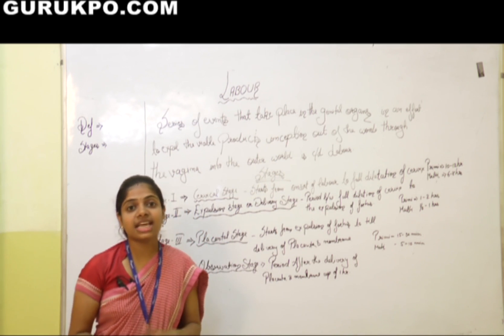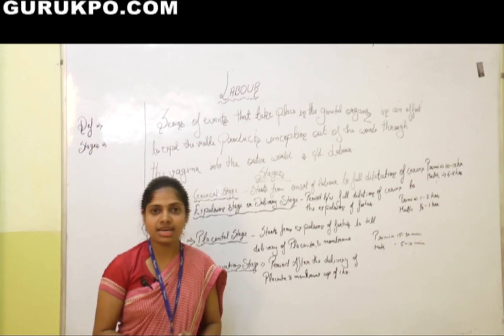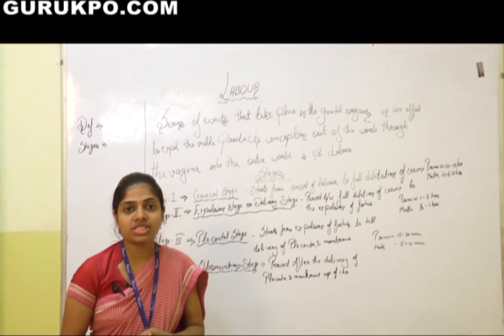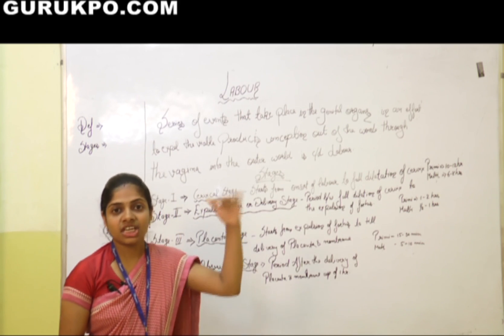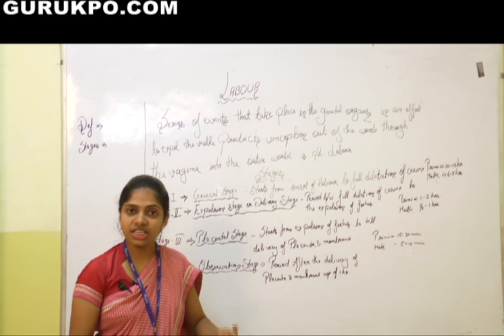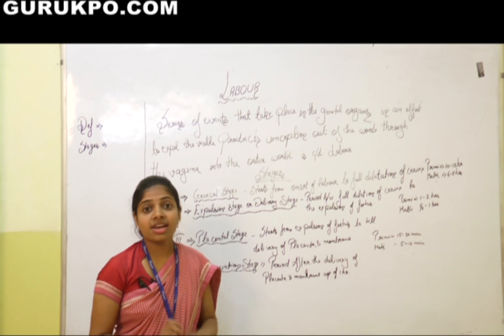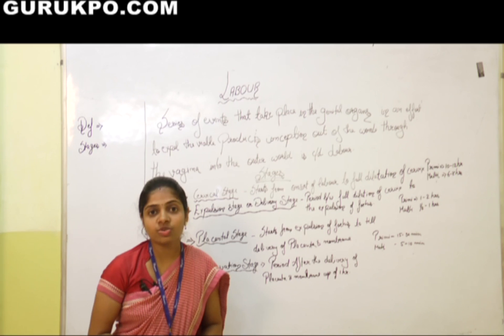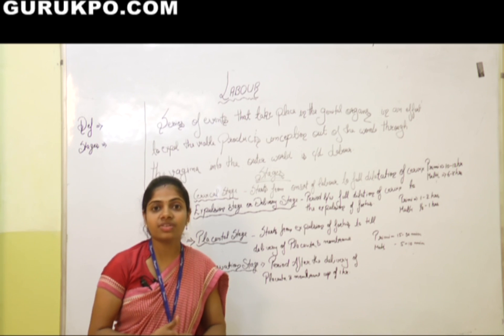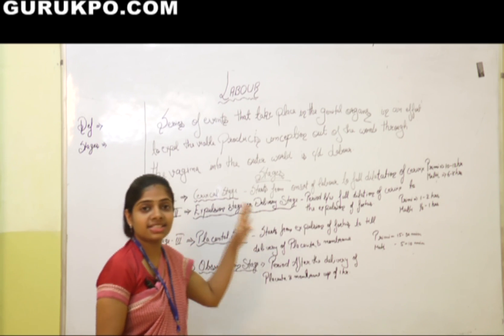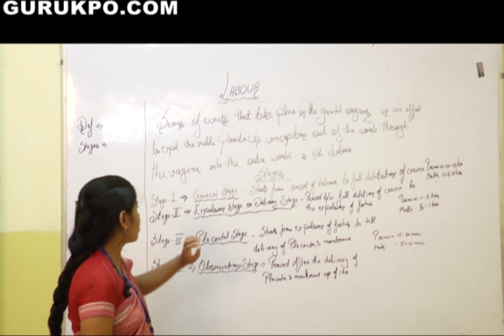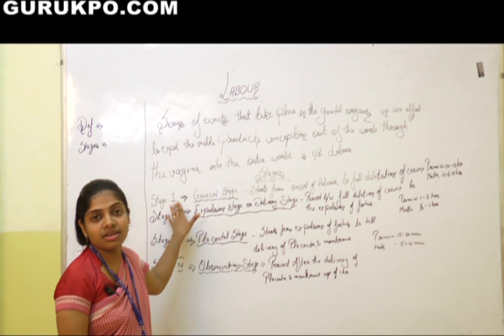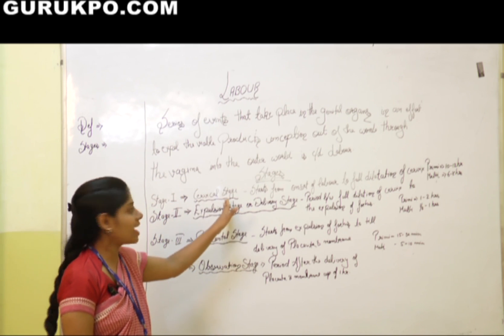Now let us see the stages of labor. Labor is divided into four stages: stage one, stage two, stage three, and stage four. Today we are talking about the first stage of labor, which is also known as the cervical stage.